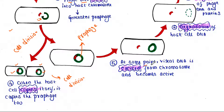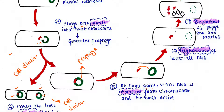At some point, the viral DNA will be excised from the chromosome and will become active. The viral DNA contains some genes, and those genes will encode some enzymes.